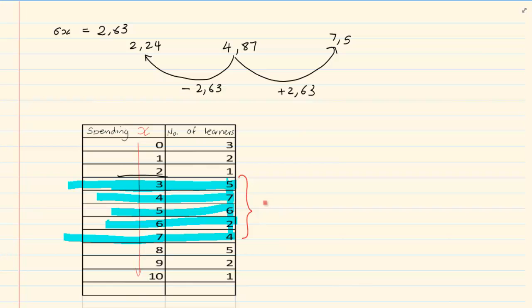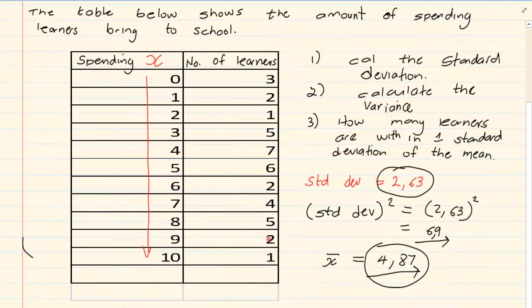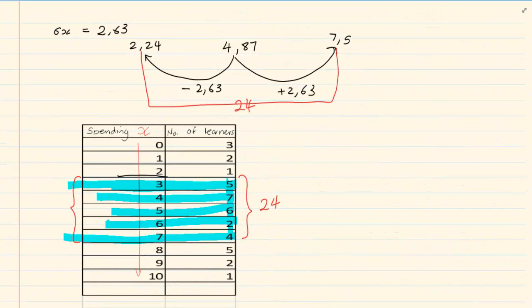So how many are within one standard deviation? 24 learners. You can see how we took all the values within that range. There are 38 learners altogether, and 24 are within one standard deviation. You can say that most learners are within one standard deviation of the mean.